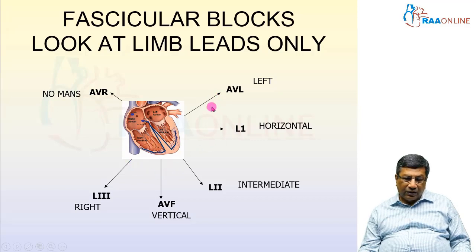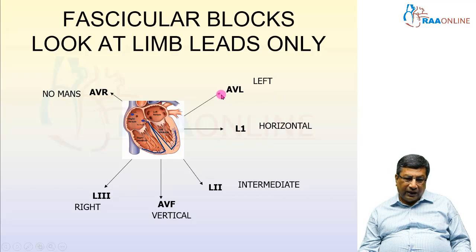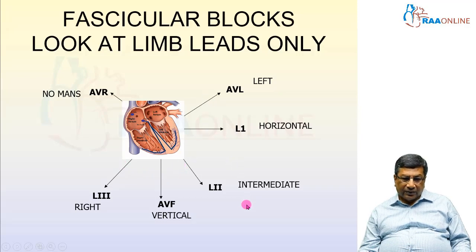This diagram is very important — I have positioned all six limb leads around the heart. L1 is horizontal, L2 is intermediate, AVF is vertical, L3 is right, AVL is left, and AVR is no man's land. We are not going to use AVR to diagnose fascicular blocks. We look at either the superior and left-sided leads (L1 and AVL) or the inferior and right-sided leads (L2, AVF, and L3). Fascicular blocks produce significant changes in these inferior/right-sided and superior/left-sided lead groups.